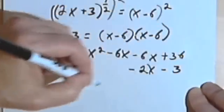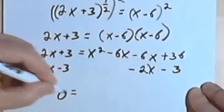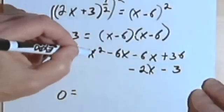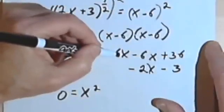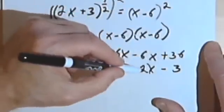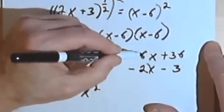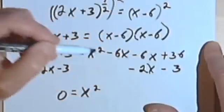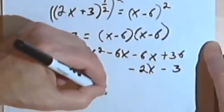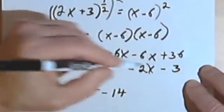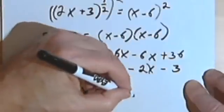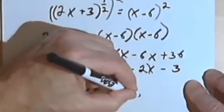So I'm going to get zero equals, I've only got 1 x squared, so I've got this x squared. I've got a negative 6x, a negative 6x, and a negative 2x. Negative 6 and negative 6 is negative 12. Negative 12 and negative 2 is negative 14. And then I've got 36 minus 3, so that's going to be 33.